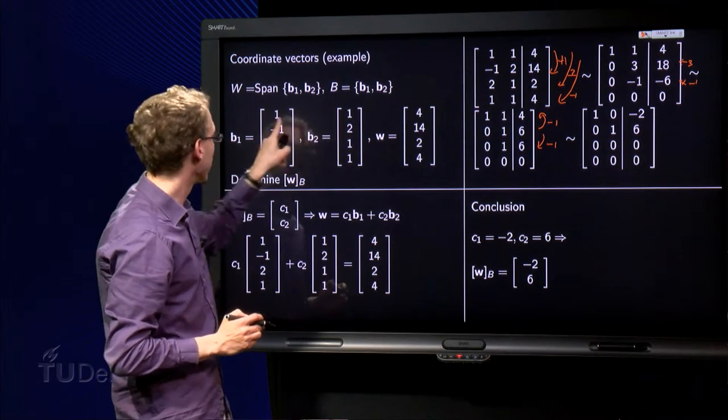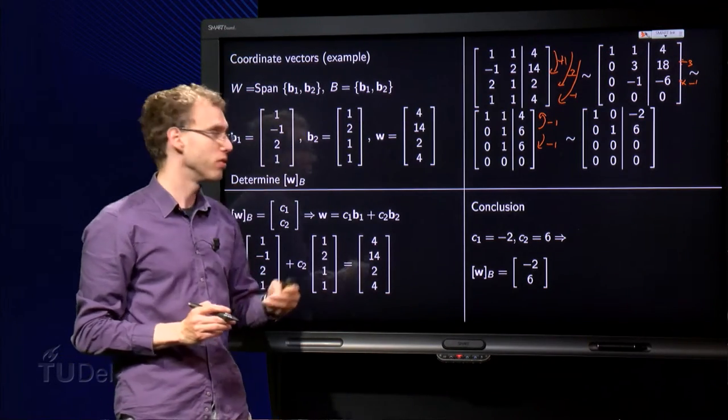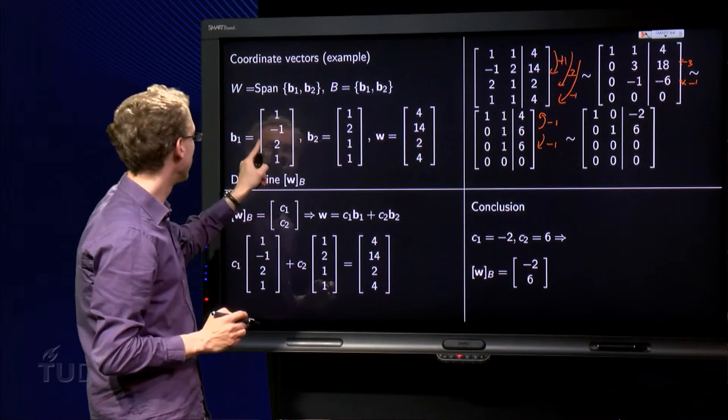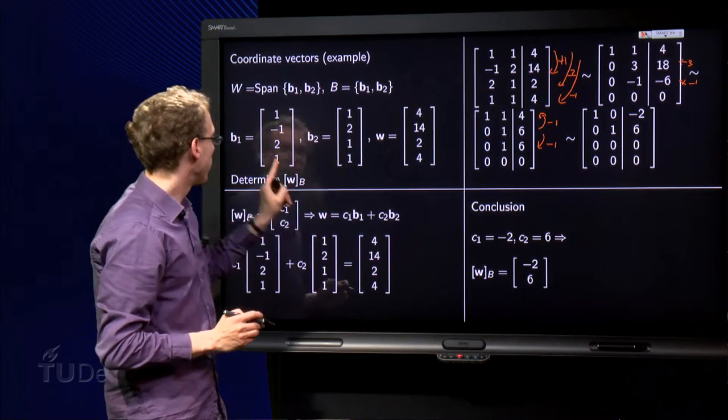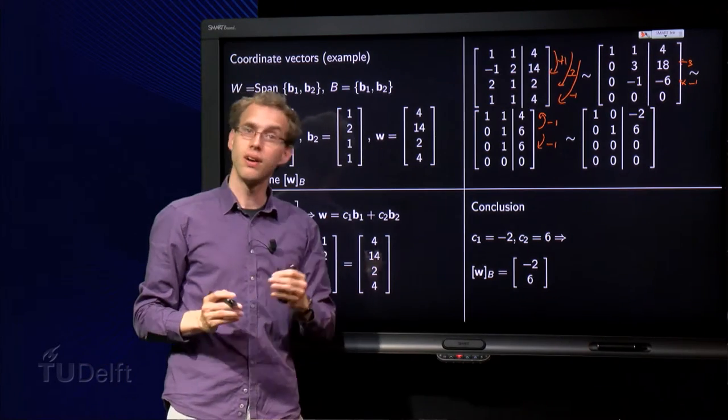Minus 2 times b1 plus 6 times b2—minus 2 plus 6 equals 4. Minus 2 times minus 2 plus 6 equals 4. So indeed that's correct.